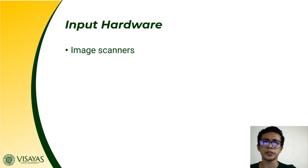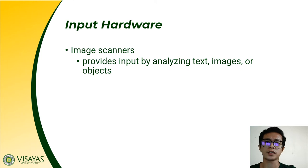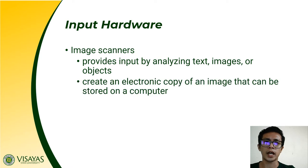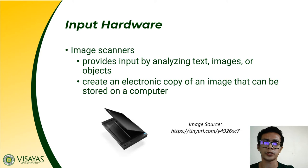Another category of input hardware includes image and video devices, which include your image scanner, barcode reader, and webcam. An image scanner provides input to a computer system by analyzing text, images, or objects. It is mainly used to create an electronic copy of an image that can be stored in a computer system — for example, scanning an old photograph to create a soft copy stored on your computer.